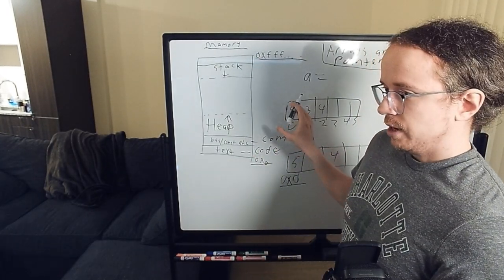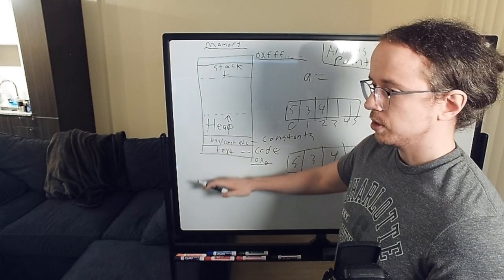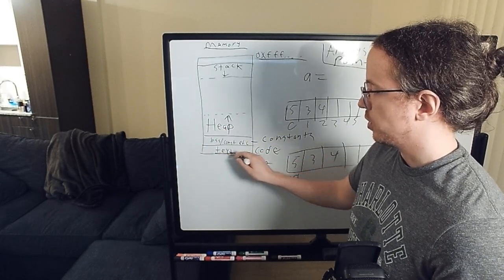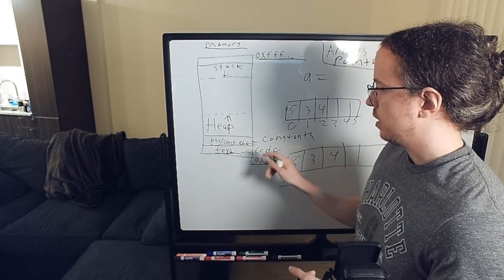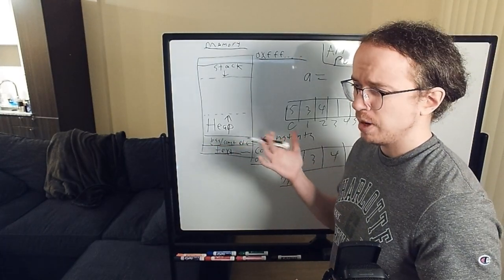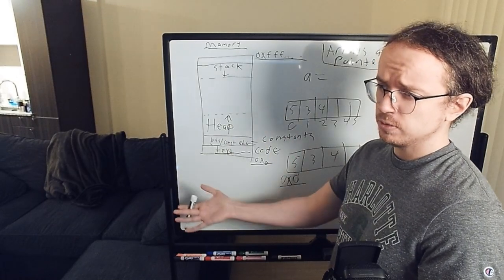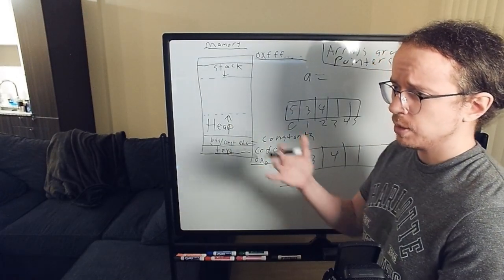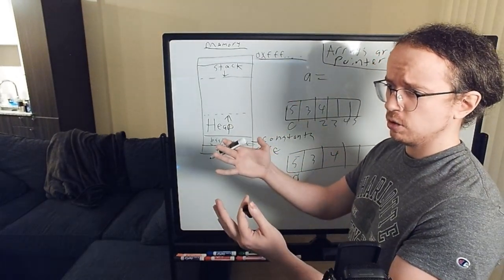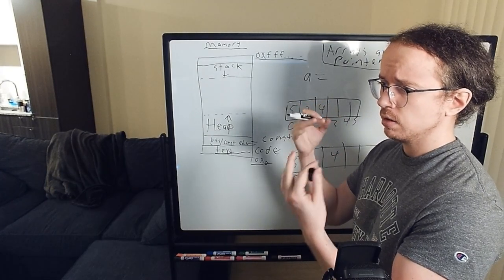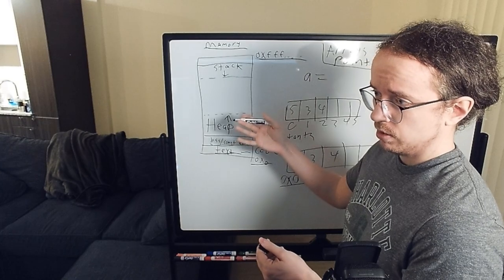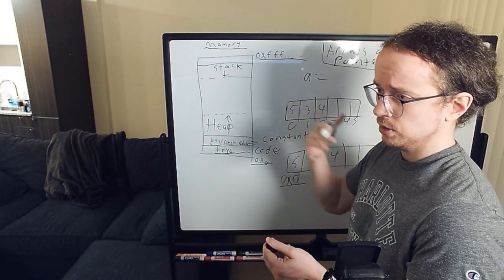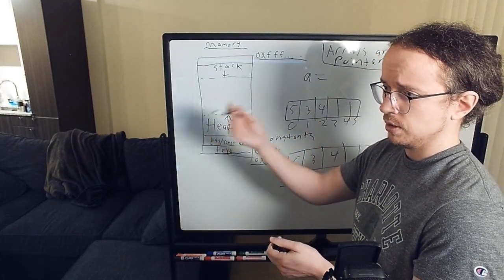And then we have all of these features are mostly fixed. You don't change the code usually when you're running your program. Constants or global variables, maybe you do change the value of a global variable, but the memory does not go away. The global variable is always there. And then we have the two dynamic regions, regions that change during your program execution. The size changes.